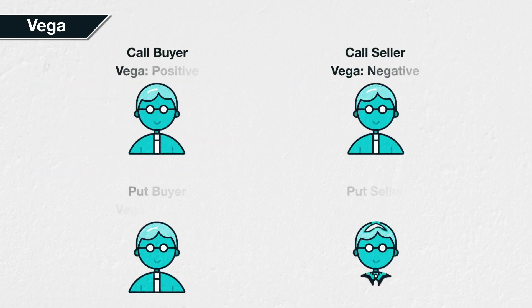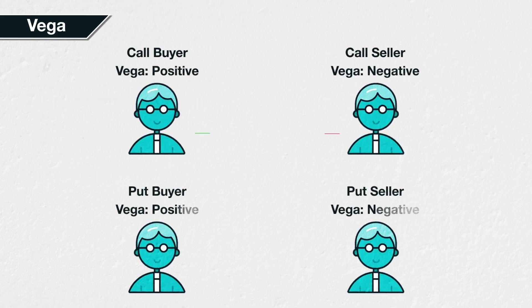This is true for both puts and calls. The buyer of a call option has positive Vega. The buyer of a put option also has a positive Vega. The seller of a call option has a negative Vega, and the seller of a put option also has a negative Vega. Of course, any gain for the option buyer is a loss for the option seller, and vice versa.